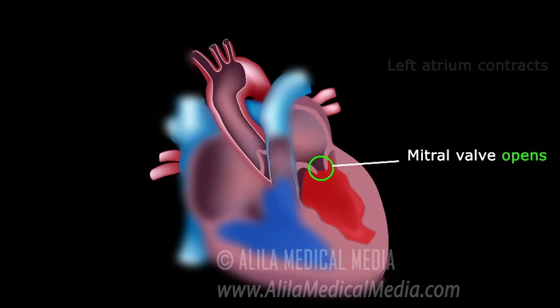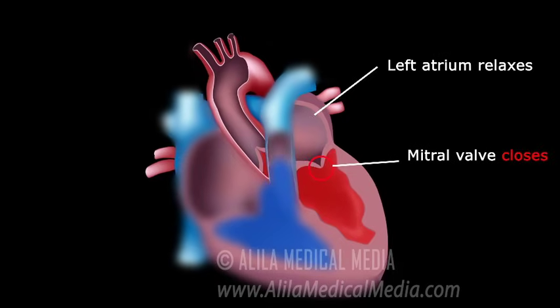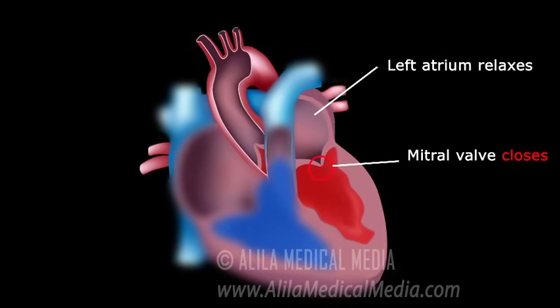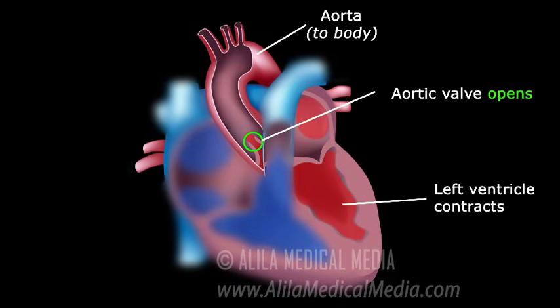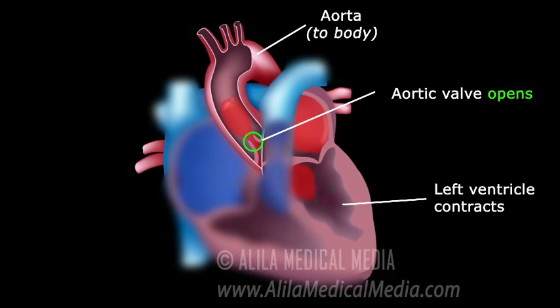As the left ventricle is full, the mitral valve closes, the aortic valve opens, the left ventricle contracts, and oxygen-rich blood is pumped into the aorta to reach all parts of your body. This happens at the same time as the right ventricle pumps blood into the pulmonary artery on the other side of the heart.